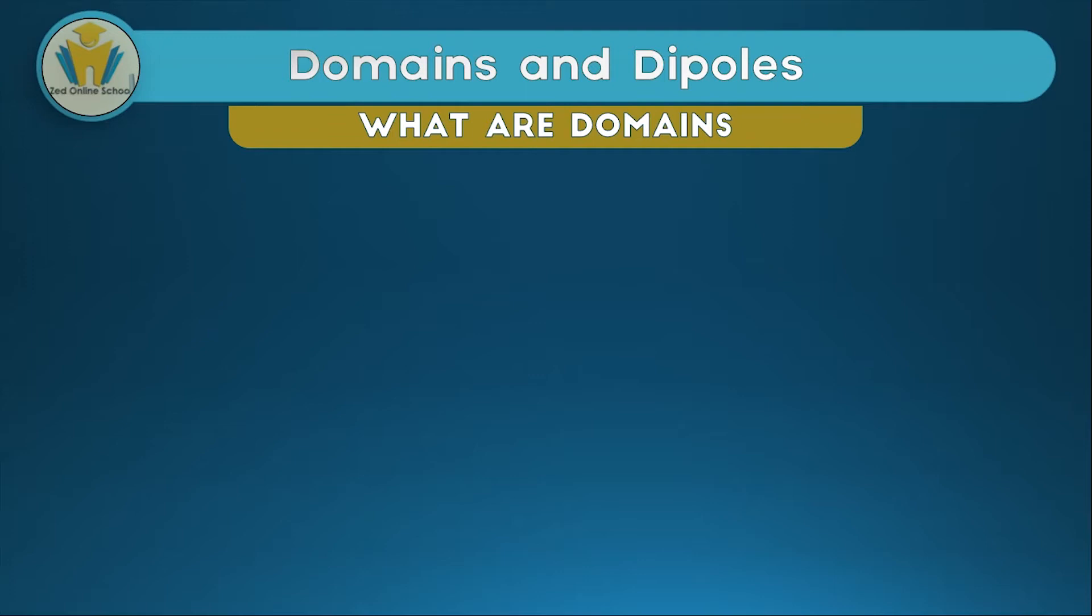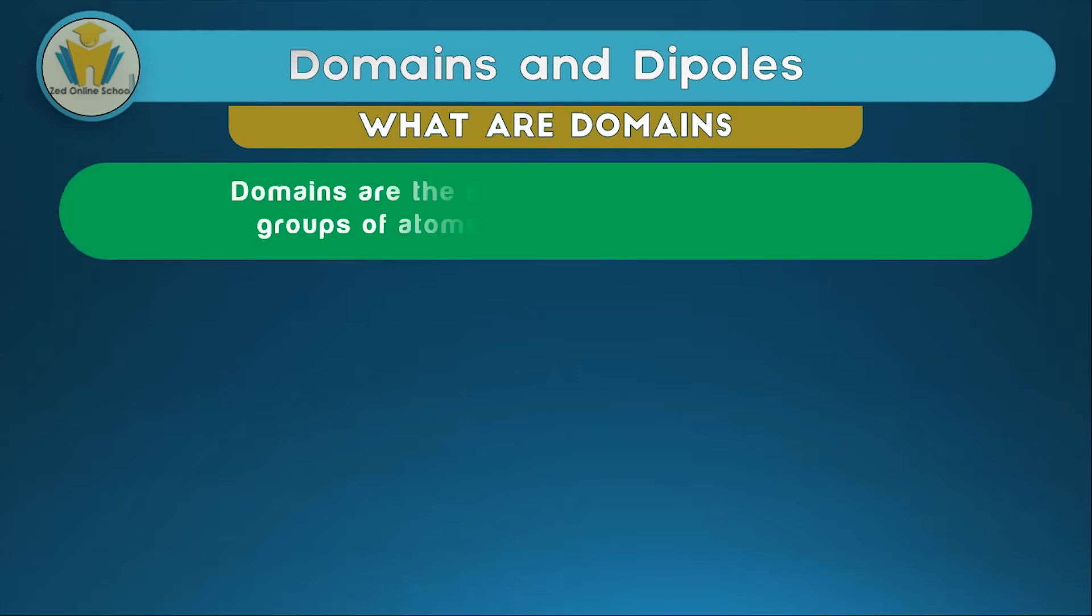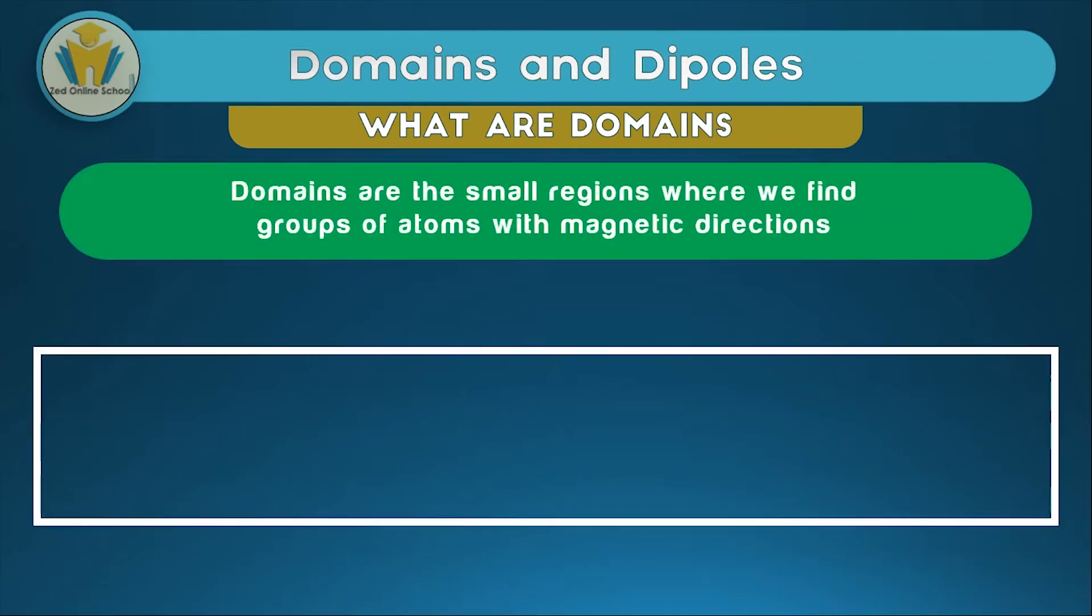To get an understanding of the domain theory, we'll look at domains and dipoles. Domains are those regions where we find those atoms with a magnetic direction. They are just boundaries where we find similar atoms that have magnetic direction. These regions in this diagram show some representation of how domains look in a magnet.